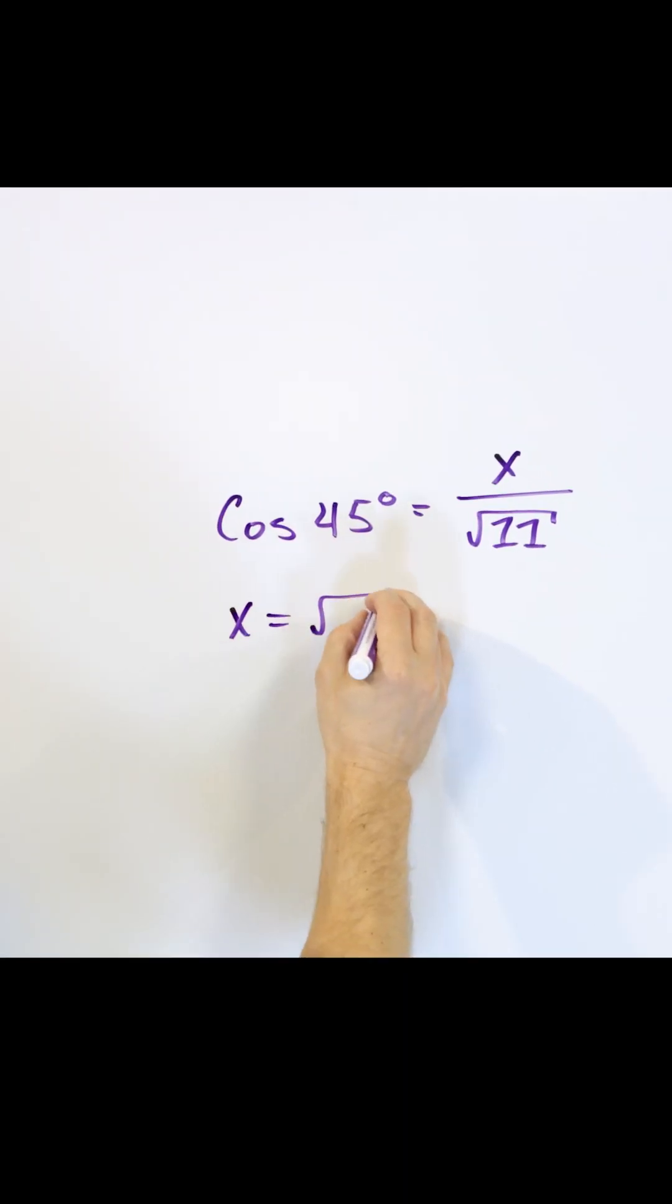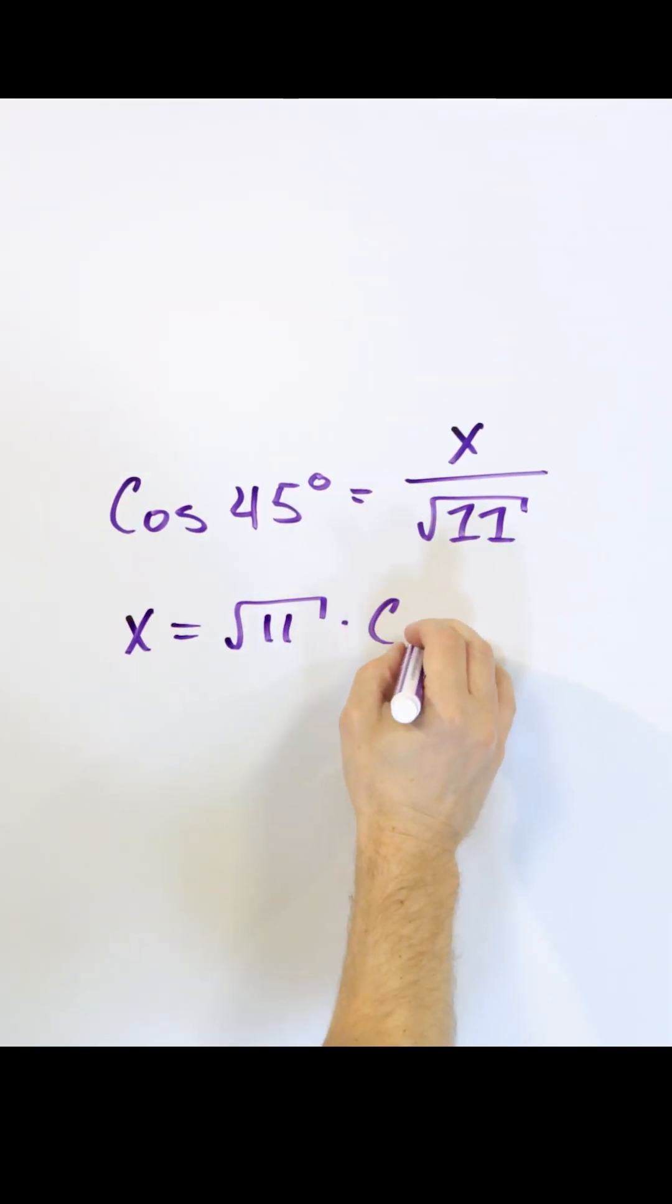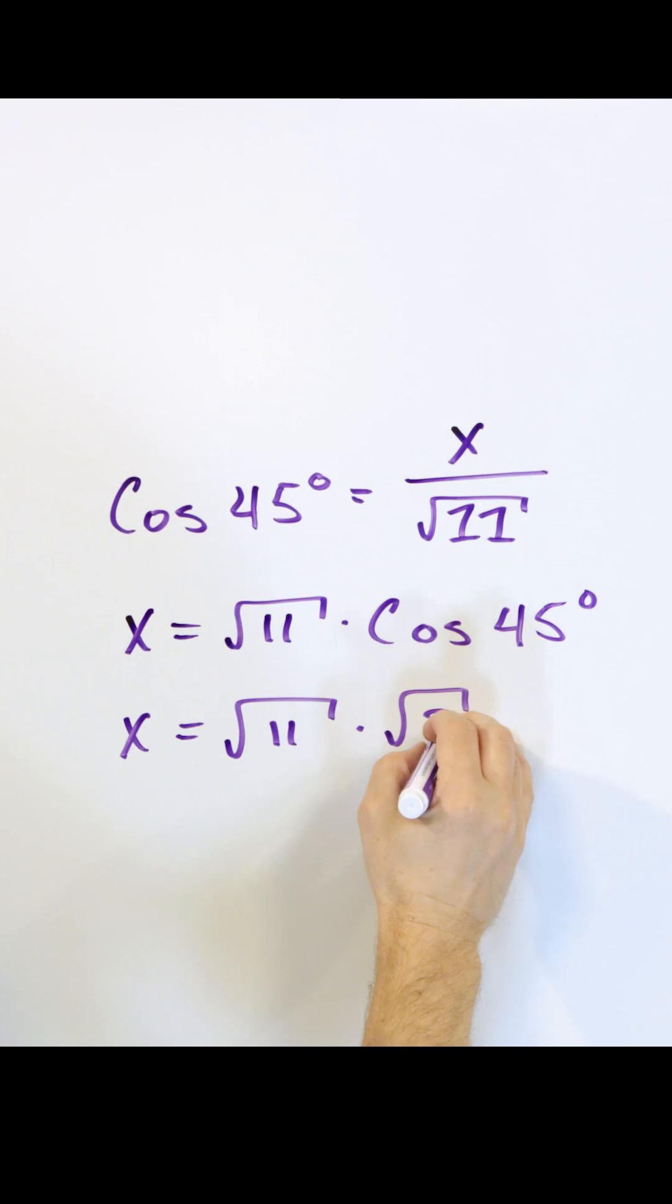x is going to be equal to the square root of 11 times the cosine of 45 degrees. We just said cosine 45 is exactly the same number. So I have the square root of 11 times square root of 2 over 2. So I get exactly the same thing.